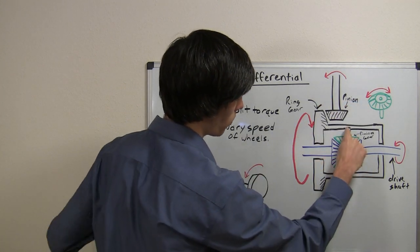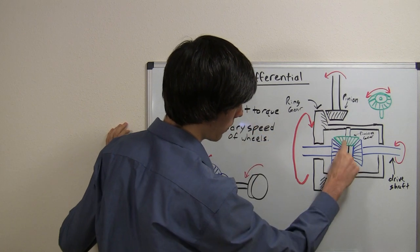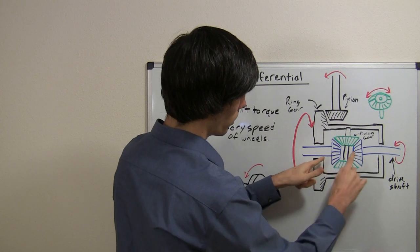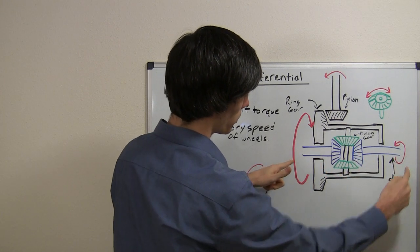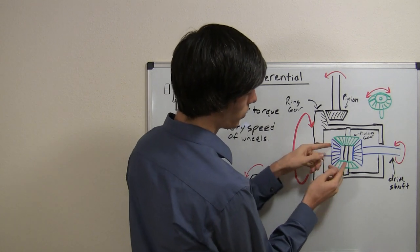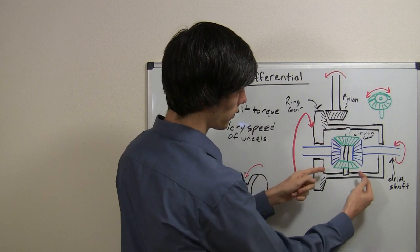Okay, so within this you can see this pinion shaft and on that pinion shaft we've got two pinion gears. Now each of these gears are meshed to the two drive shafts. You've got the right drive shaft and the left drive shaft. So basically what we've got is two sets of bevel gears connected to each other. So what happens is,